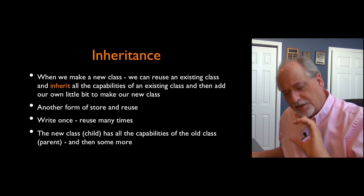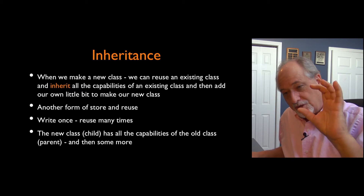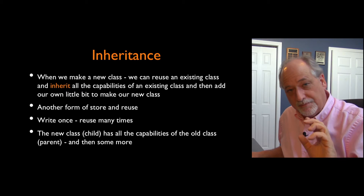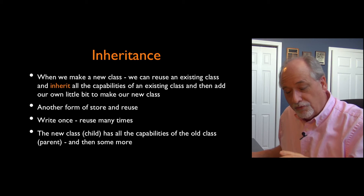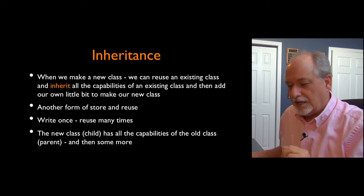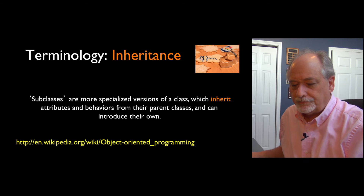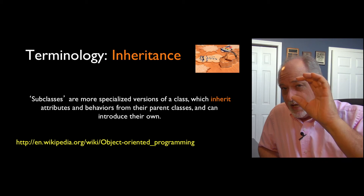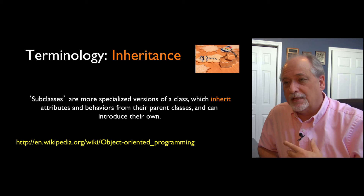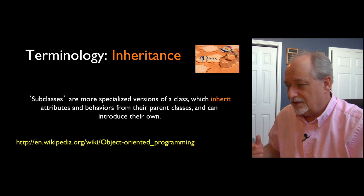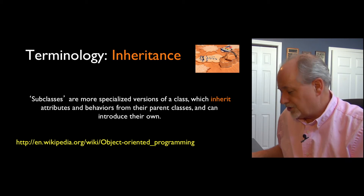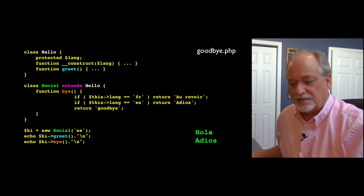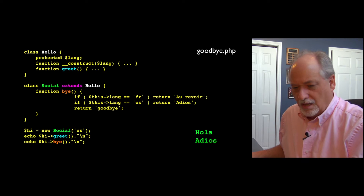We have a parent class and a child class. The child class inherits everything from the parent class except that which is overridden or added in the child class. Another word for this is subclasses — a class and a subclass. I think of it also as extending. In some languages like Java, they use the word 'extend' to say extend this thing.